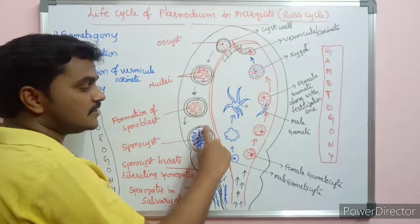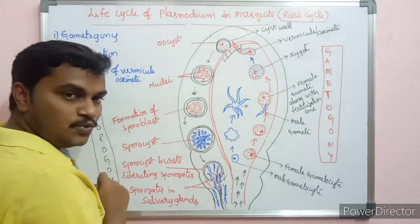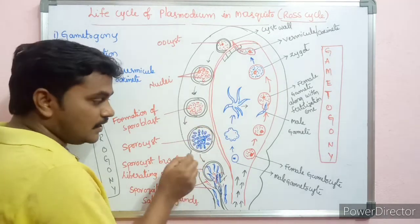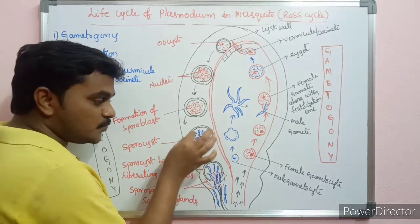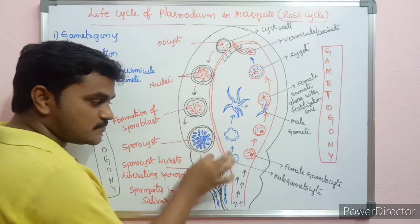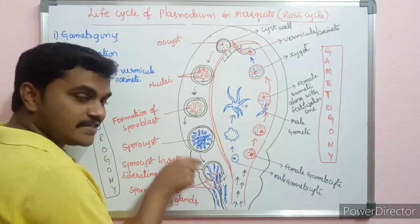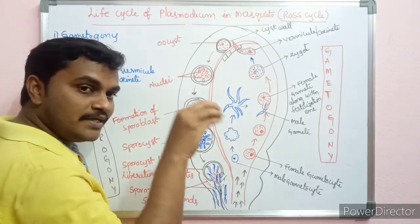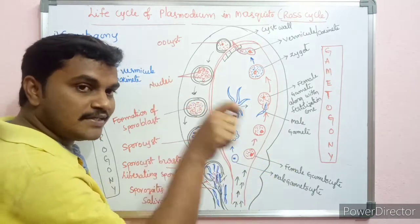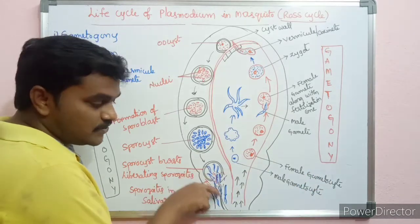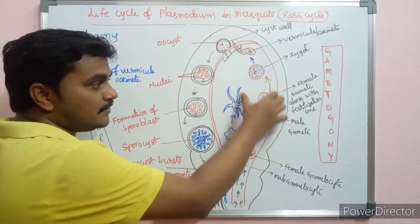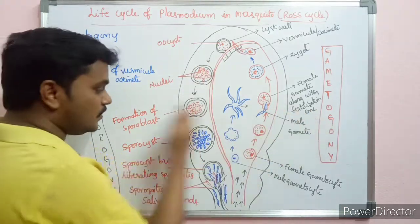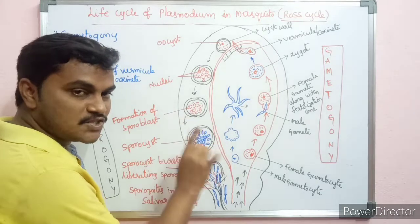The formation of sporozoites is called sporogony. The sporozoites develop within the sporocyst as the oocyst turns into the sporocyst. Once the number of sporozoites increases sufficiently, they rupture the sporocyst wall. The ruptured sporocyst liberates a large number of sporozoites, which are the infective stages. These sporozoites enter the haemocoel of the mosquito and then migrate to the salivary glands. When the mosquito bites a human being, the sporozoites are injected — this is the infective stage of Plasmodium vivax.